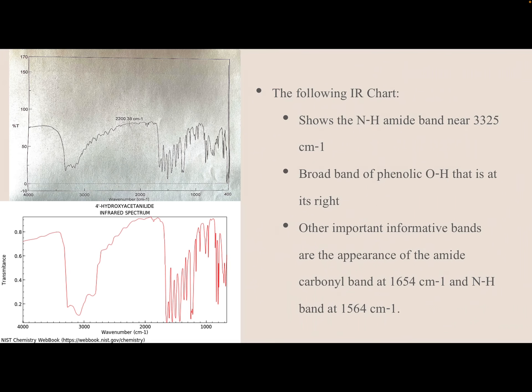To further characterize the acetaminophen, we used IR spectroscopy. The IR chart shows the N–H amide band near the 3000 region, a broad O–H band to the right of that, and other important bands: the amide carbonyl band at 1600 and the N–H band at 1500. The bottom picture is my reference spectrum. Comparing the two, they look very similar, which gives me more confidence that I did actually synthesize acetaminophen.